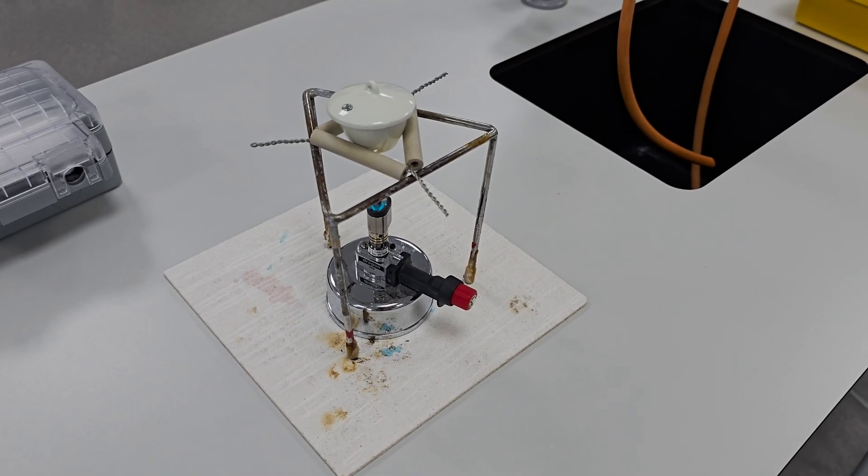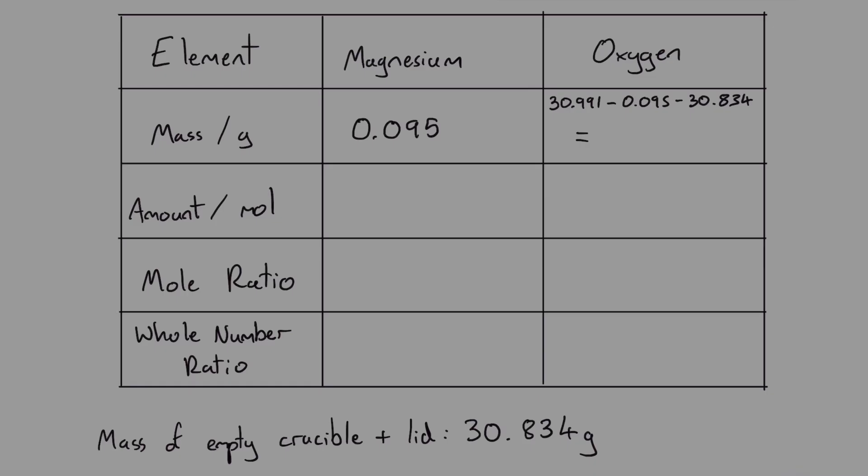To find the mass of oxygen that combined with the magnesium we subtract the initial mass of the crucible and lid which was 30.834 grams and the mass of the magnesium ribbon which was 0.095 grams from the total final mass. This gives us a mass of oxygen equal to 0.062 grams.